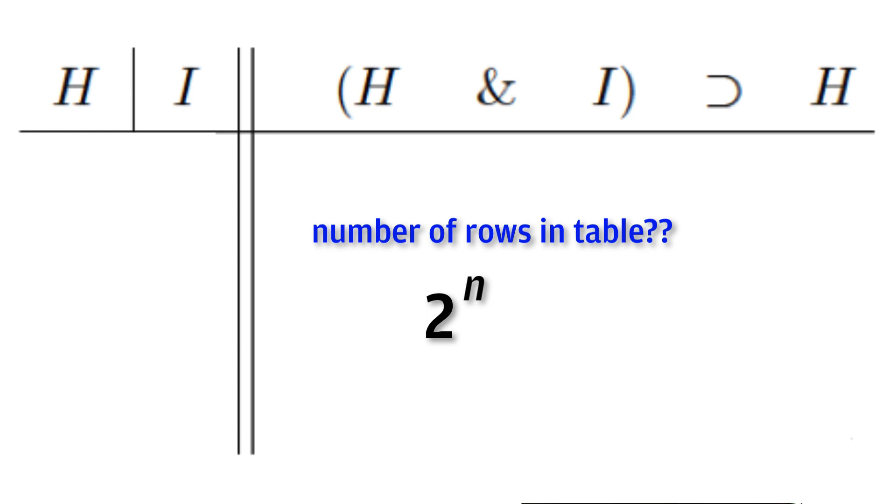the number of variables that we're using. For a truth table with two variables, such as H and I, we would have base two raised to the second power, equaling four, the correct number of required rows.